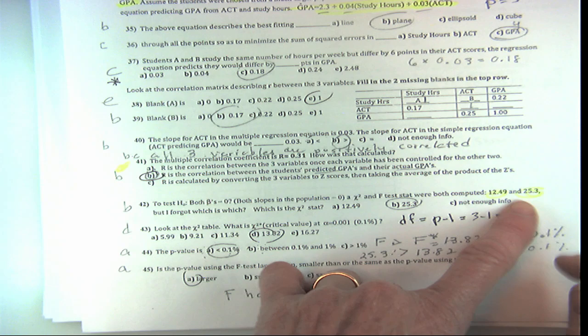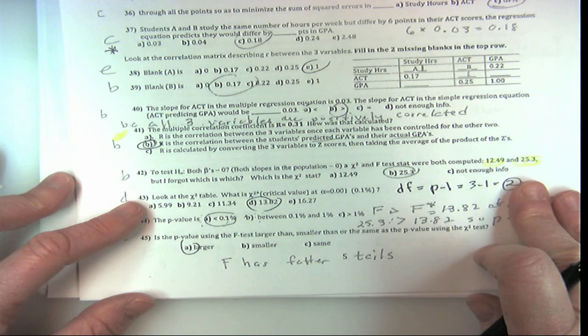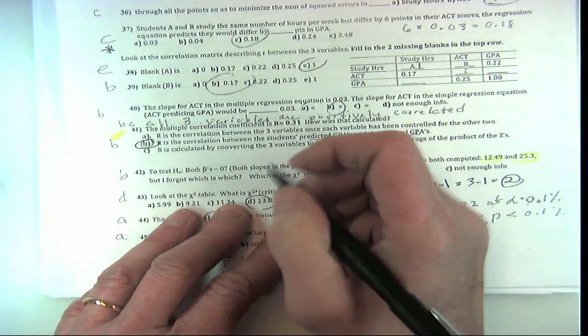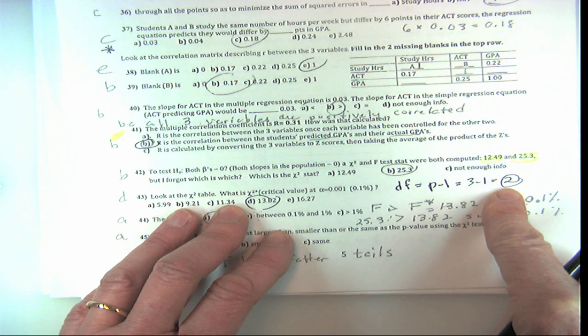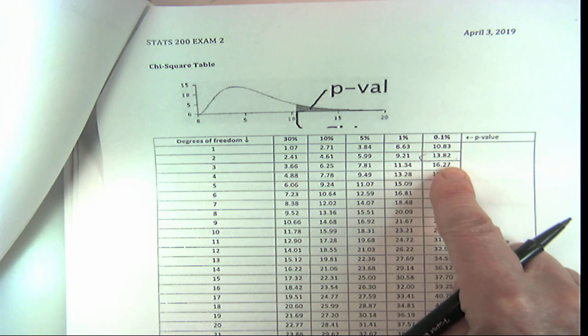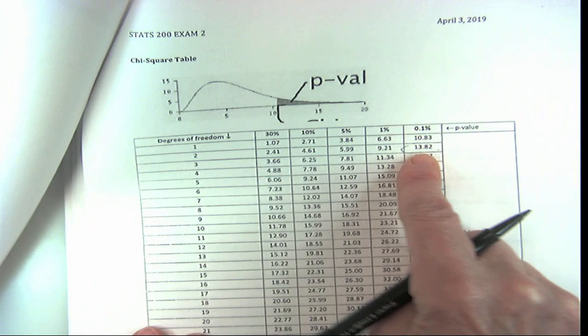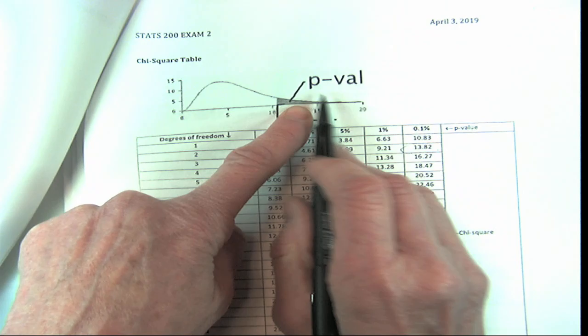Look at the chi-square table. The key is: what are the degrees of freedom for chi-squared? It's just p minus 1. You go to two degrees of freedom and look up the critical values. Our chi-squared is even bigger than those critical values—it's 25.3. So our p-value is almost zero: if the null were true and those slopes were zero, just by the luck of the draw we would not get this result.